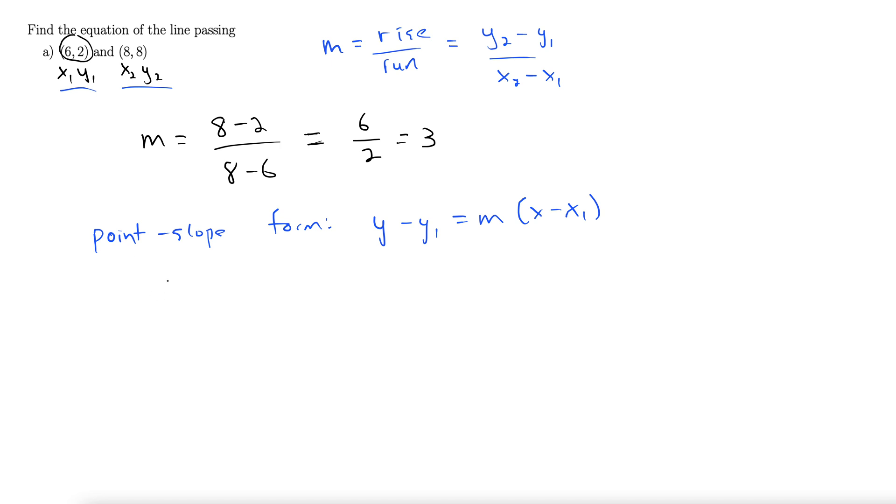I'll show it both ways. Y minus 2 equals m times x minus 6. Well, our m is 3, so let's go ahead and put that in.